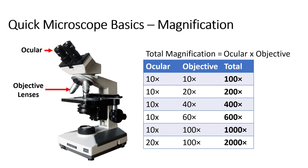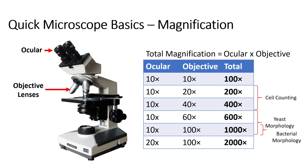These numbers don't really mean much unless you know what you can do with them. If you want to count cells to make sure you're getting reasonable pitching rates, you want 200x to 400x magnification — that's a really good range for counting cells. If you want to see yeast morphology, for example being able to tell Saccharomyces apart from Brettanomyces, you want 600x to 1000x. If you need to see bacteria, you have to have 1000x. Now, 20x oculars are usually only found on really cheap microscopes and are used to make up for poor quality objective lenses. A poor quality objective lens is useless, so if you see a microscope with a 20x ocular, run away and find a different system.